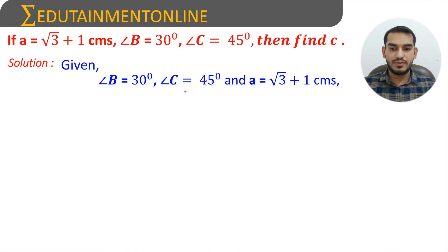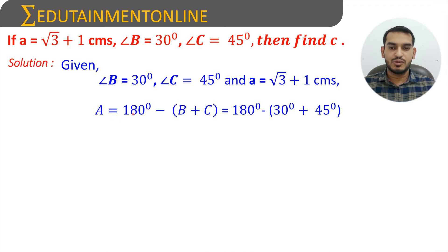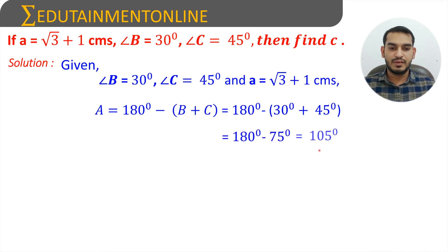Since we have two angles which is B and C, we can find the third angle A. Since we know that the sum of angles in a triangle is 180 degrees, angle A is equals to 180 degrees minus the sum of two angles which is 30 degrees and 45 degrees. 30 degrees and 45 degrees is 75 degrees. So, 180 minus 75 is 105 degrees. So, angle A is 105 degrees.